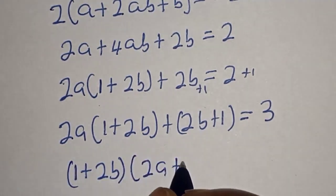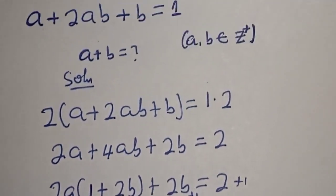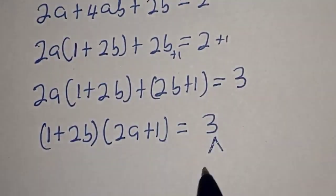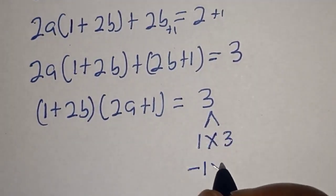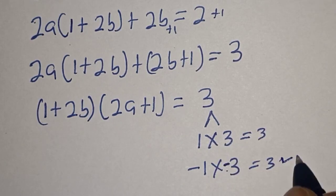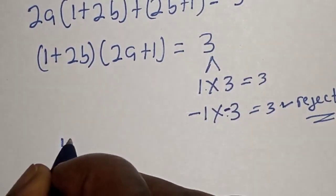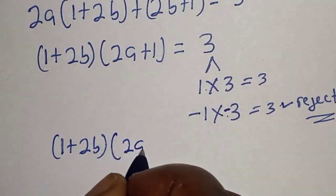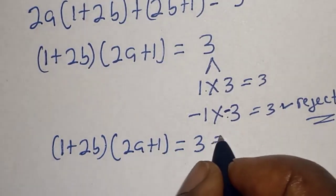But the question says a and b are members of the positive integers. Therefore 3 is the same as 1 multiplied by 3. Also 3 is minus 1 multiplied by minus 3, but since we are dealing with positive integers, that case is rejected. We work with 1 multiplied by 3.